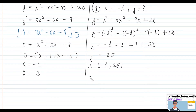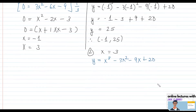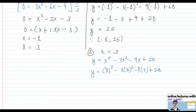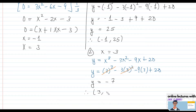Next, at x = 3, we go back to the original function y = x³ - 3x² - 9x + 20 and substitute x = 3. We get 3³ - 3(3²) - 9(3) + 20. The terms 27 and -27 cancel out, leaving -9(3) + 20 = -27 + 20 = -7. So the second critical point is (3, -7).